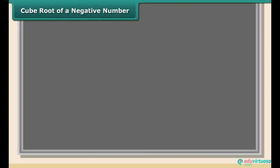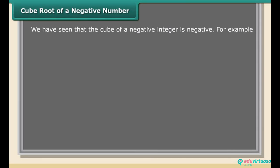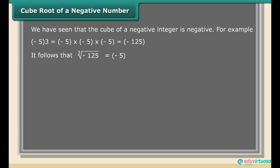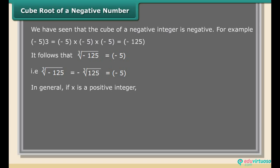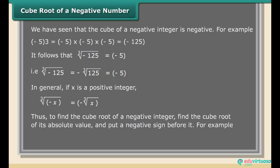Cube root of a negative number. We have seen that the cube of a negative integer is negative. For example, (−5)³ = (−5) × (−5) × (−5) = −125. It follows that ∛(−125) = −5. That is, ∛(−125) = −∛125 = −5. In general, if x is a positive integer, ∛(−x) = −∛x. Thus to find the cube root of a negative integer, find the cube root of its absolute value and put a negative sign before it. For example, ∛(−64) = −∛64 = −4.